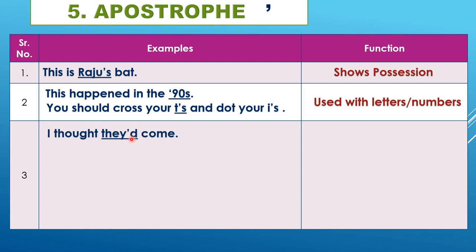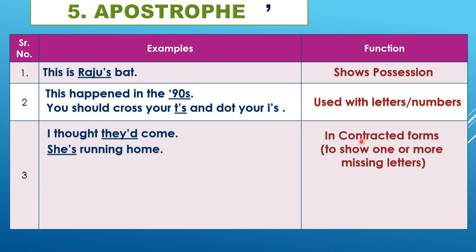Apostrophe is used in contracted forms to show one or more missing letters. For example: 'I thought they'd come' — 'they would' is contracted to 'they'd.' 'She's running home' means 'she is running home' — the apostrophe indicates a missing letter. Apostrophe shows how words are contracted.